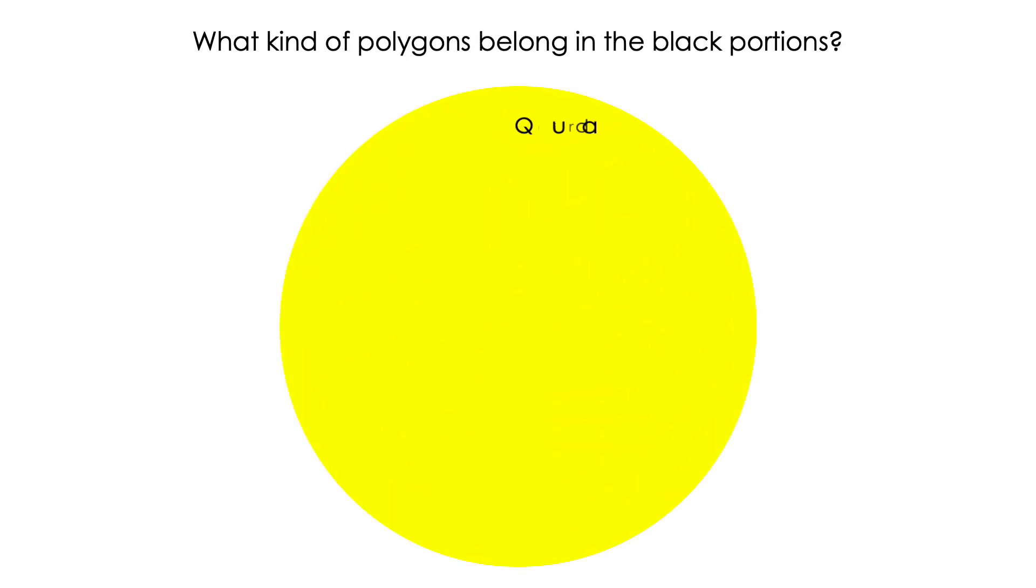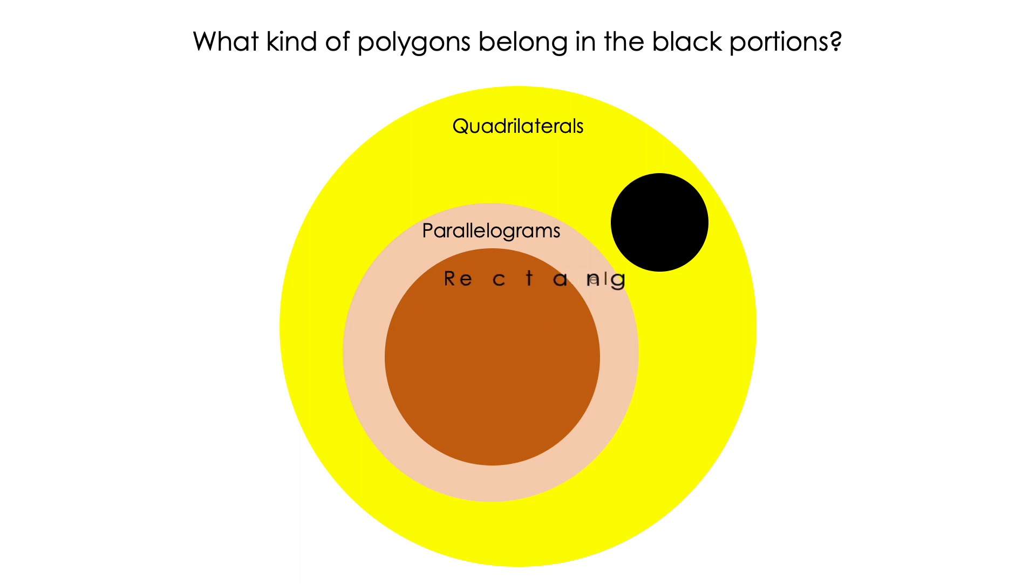Well, inside the quadrilaterals, we have one, but it's outside parallelograms. So, that means that if it's not a parallelogram, but it's also a quadrilateral, that means that it could be a trapezoid.